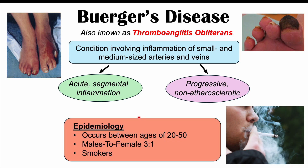This condition is going to occur in younger-aged individuals, anywhere usually between the ages of 20 to 50, and it's not going to occur in pediatric or elderly populations. It's more likely to occur in males — males are going to outnumber females three to one. So what we're generally going to see would be a younger male smoker as the characteristic case of Buerger's disease.